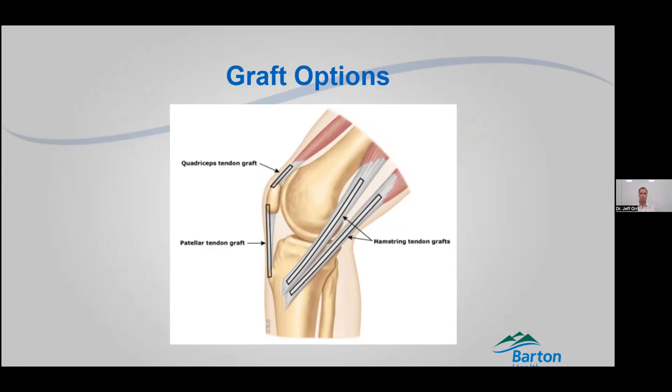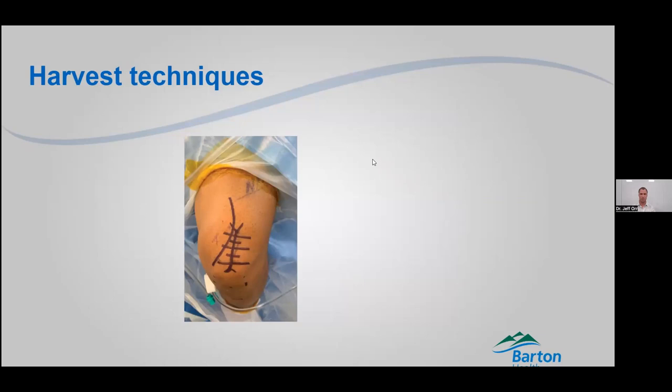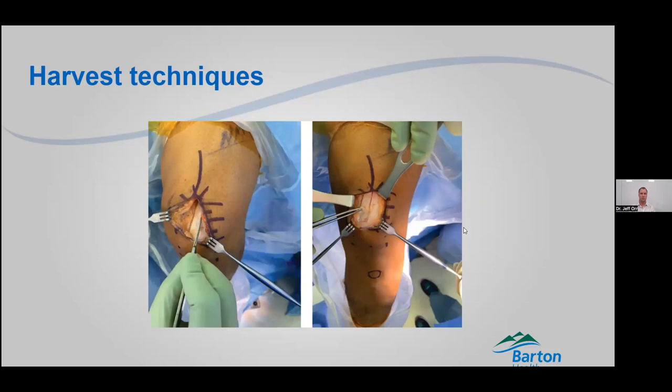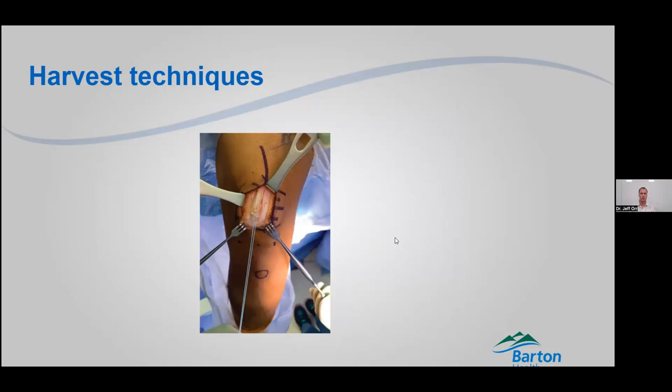How do we take a quad tendon if we're going to use your own? If it comes from a cadaver, it's already preset up for you and you don't have to harvest anything. If you're taking your own, we'll make a linear incision on your knee — usually between three and five centimeters long. You can see your quad tendon down below. We'll take the central eight to nine to ten millimeters of quad tendon, which represents about 20% of the quad — a smaller percentage than other parts of the knee. We'll tag it with a suture, and you can see that nice delineated tendon right there.